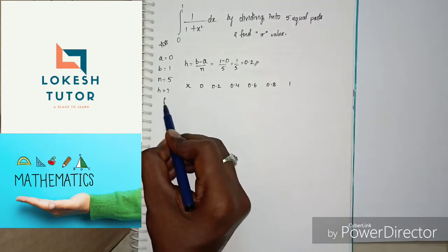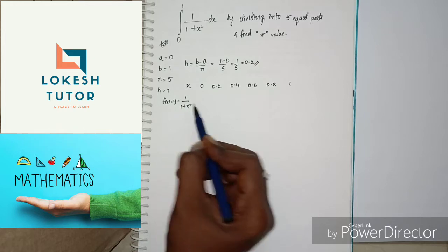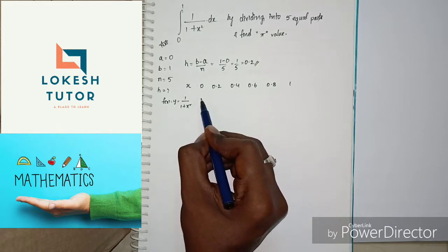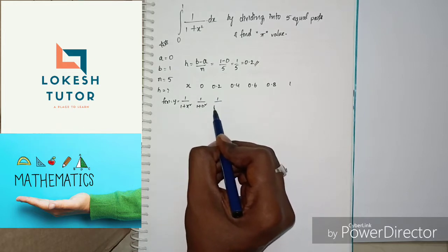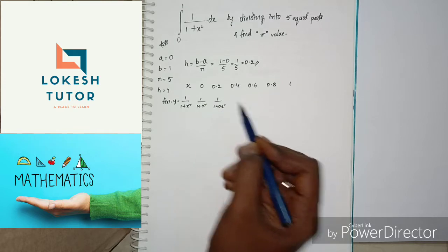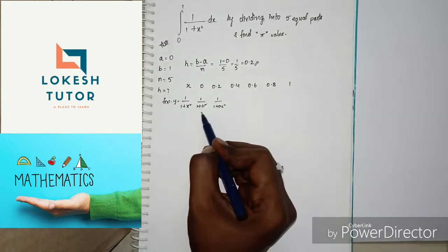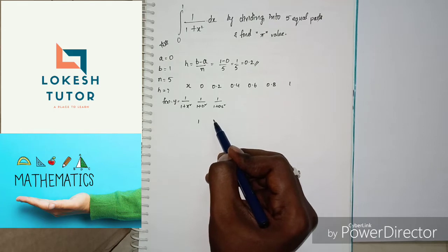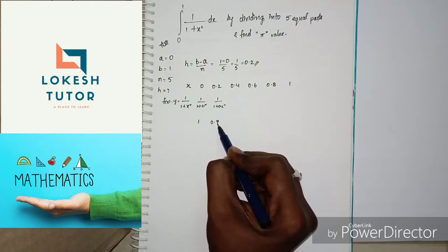Next, the function values. F of x equals y equals 1 by 1 plus x squared. So y0 is 1 by 1 plus 0 squared, and y1 is 1 by 1 plus 0.2 squared.